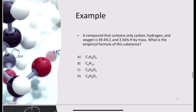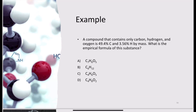Let's work another example: a compound contains only carbon, hydrogen, and oxygen; it is 49.4% carbon and 3.56% hydrogen by mass. Since it only contains those three elements, and percentages are given for only two of them, the difference must be the percentage of oxygen. 49.4% plus 3.56% equals 53.0%, so oxygen must be 47.0%.